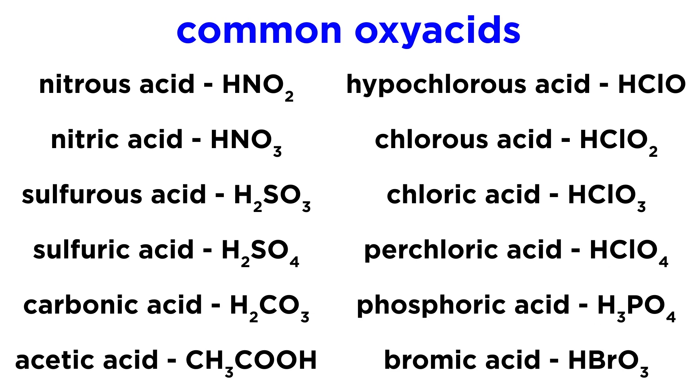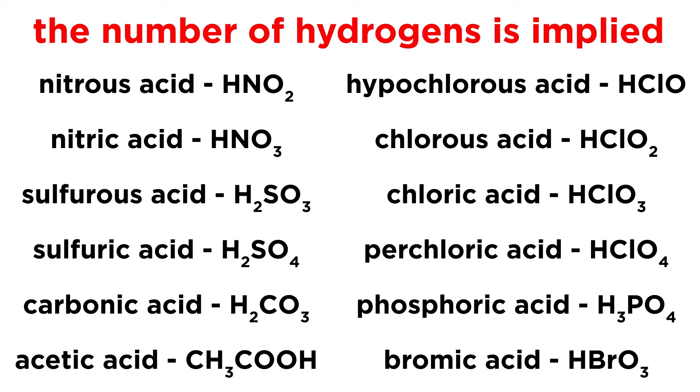Here is a list of common oxyacids, and we should be able to see the polyatomic anions they are derived from. Note that we do not need to specify the number of hydrogen atoms, as that is implied by the common charge of the anion involved.